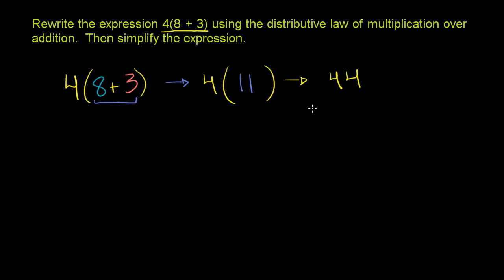So you can evaluate it that way, but they want us to use the distributive law of multiplication. We did not use the distributive law just now — we just evaluated the expression using the parentheses first, then multiplied by 4. In the distributive law, we multiply by 4 first. It's called the distributive law because you distribute the 4. So what this will become is 4 times 8 plus 4 times 3.